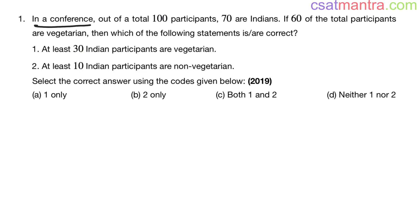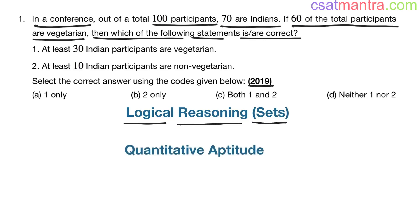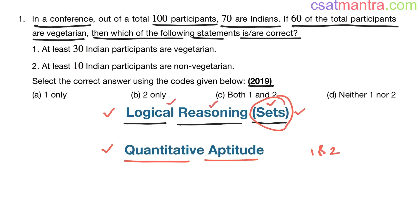In a conference, out of total 100 participants, 70 are Indian. If 60 of the total participants are vegetarian, then which of the following statements is/are correct? This question is from the logical reasoning part, from the sets chapter. It was asked in 2019. When it comes to the quantitative aptitude maths part from sets chapter, you will see one or two questions every year. Apart from that, in logical reasoning also, you will see questions from sets chapter. So this chapter is very very important. Mastering quantitative aptitude mathematics has advantages in other parts as well.